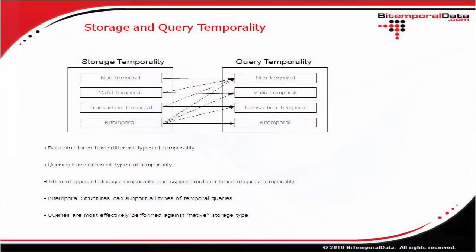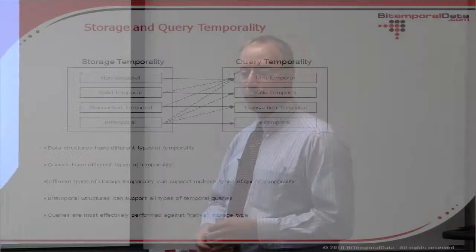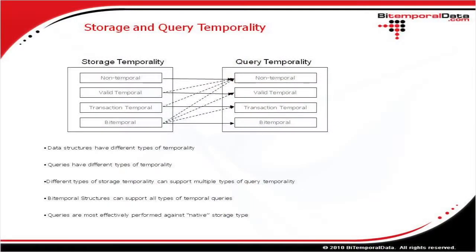The next concept to introduce, now that we're grounded in storage temporality, is query temporality. These are two different concepts. For a non-temporal query, you just get back that single value — say, a customer's credit rating. You can accomplish that query against non-temporal storage, valid temporal storage, or bi-temporal storage. But for bi-temporal queries, where you want the full richness of that matrix, you can only get that if you have bi-temporal storage.